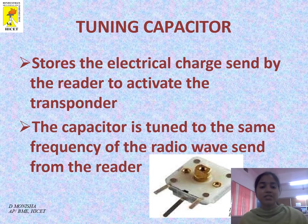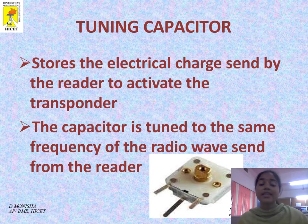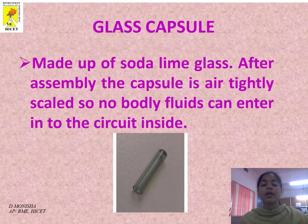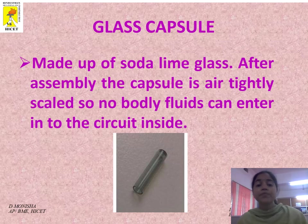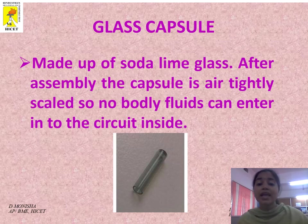Tuning capacitor: The tuning capacitor stores the electrical charge sent by the reader to activate the transponder. The capacitor is tuned to the same frequency of the radio waves sent from the reader. Glass capsule: It is made up of soda lime material. After assembly, the glass capsule is tightly sealed so no bodily fluids can enter into the circuit inside.